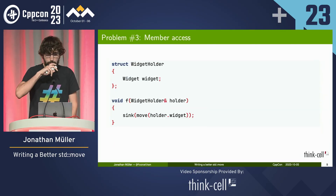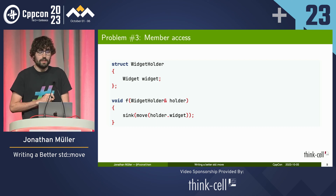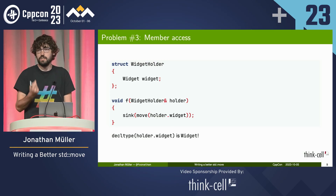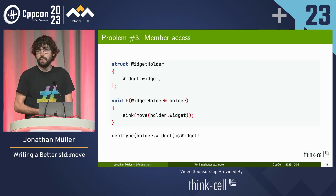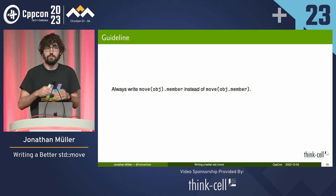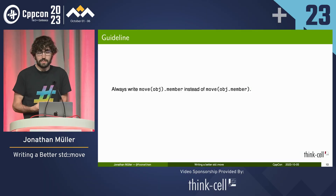While this works, it has some edge cases. If we're moving from a member variable of an object, the problem is that decltype of that thing is widget, not widget L-value reference — even though we're moving out of an L-value reference indirectly. To prevent that, we need to ban that syntax. Instead of move(object.member), you need to write move(object).member. The end result is the same, it's just that the decltype then works correctly.